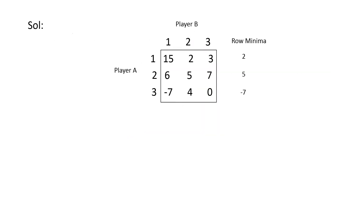For the solution, first you have to find the minimum value of each row. The values are 15, 2, 3 / 6, 5, 7 / -7, 4, 0. The row minima are 2, 5, and -7. After finding the row minima, we have to find the column maxima — the maximum of each column.